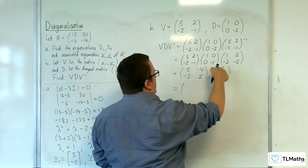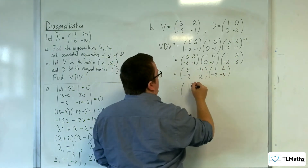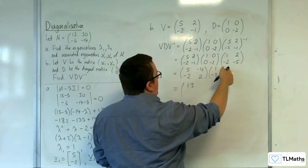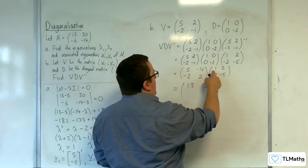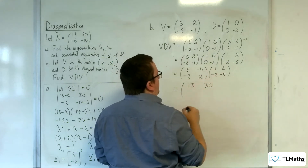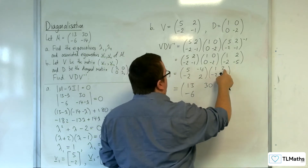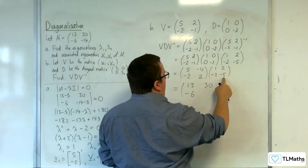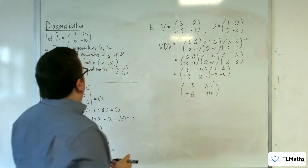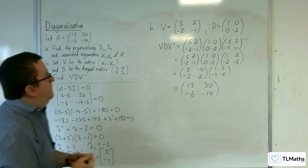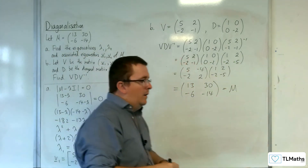Working through the multiplication: 5 times 1 is 5, plus 8 gives 13; then 10 plus 20 gives 30; then minus 2 minus 4 gives minus 6; and minus 4 minus 10 gives minus 14. So the result is exactly the matrix 13, 30, minus 6, minus 14, which is precisely M, our original matrix.